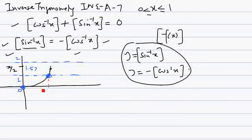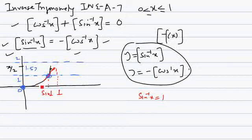Between the two consecutive points of intersection, this is the value of x where sin inverse x equals to 1, so x equals sin 1. Between 0 and sin 1, sin inverse x is between 0 and 1, so when you take the greatest integer of it, it becomes 0. Between sin 1 and 1, it becomes 1. So the red graph is the graph of greatest integer of sin inverse x.